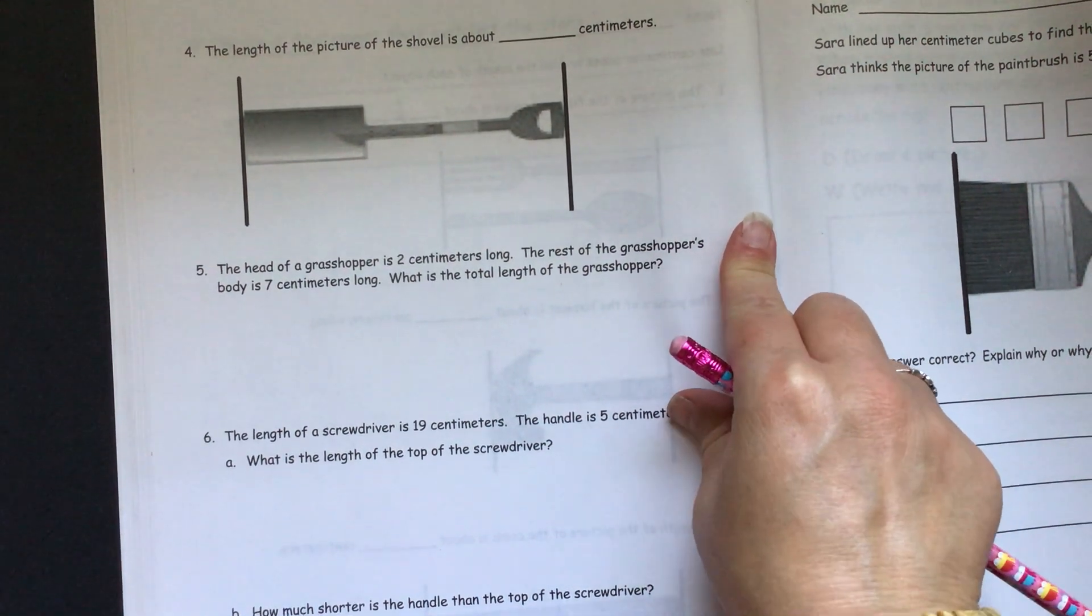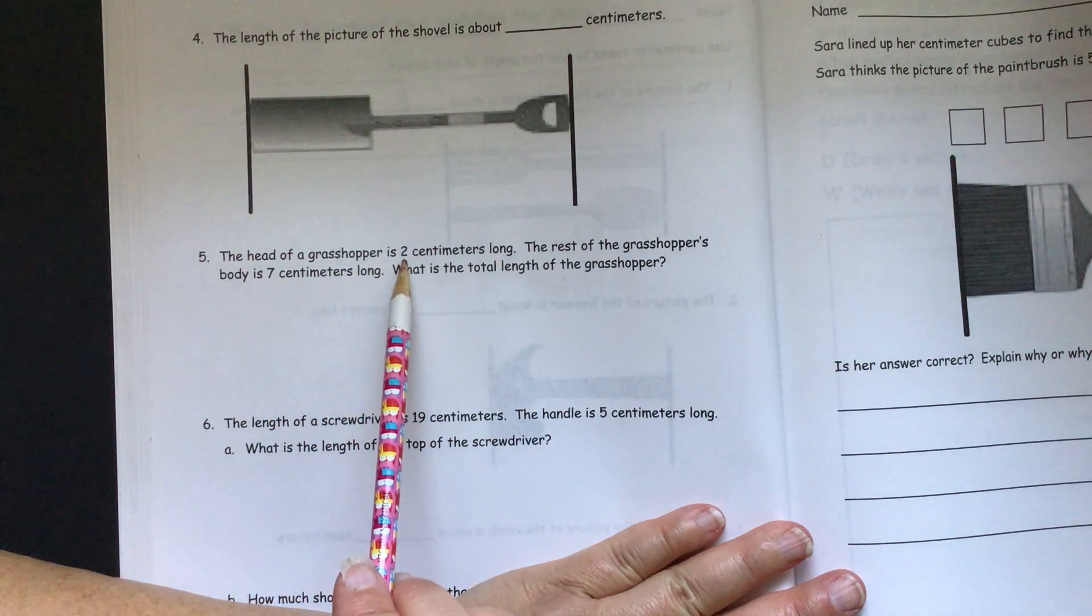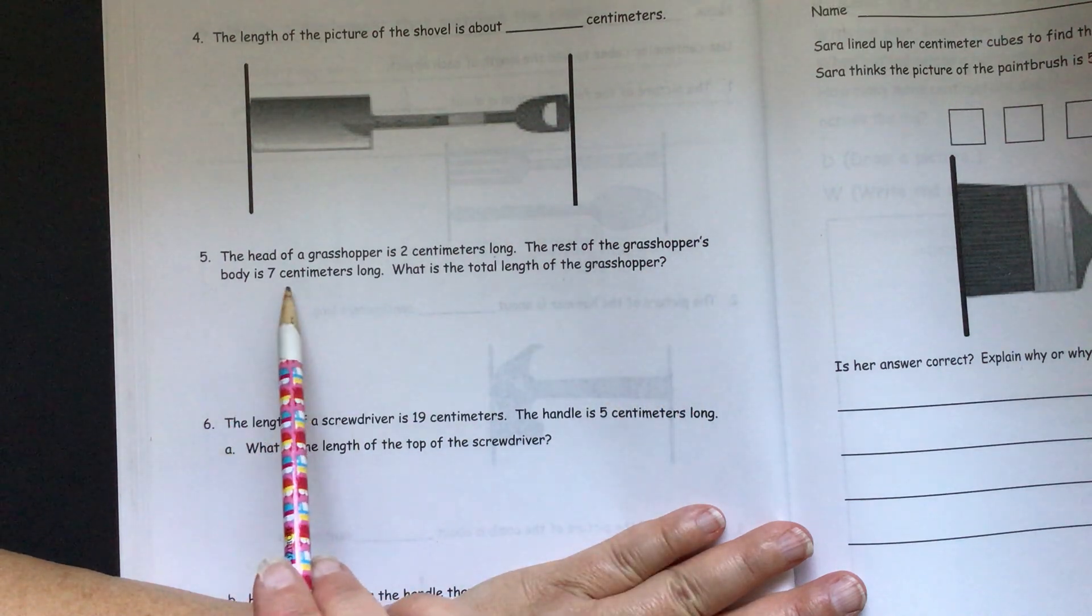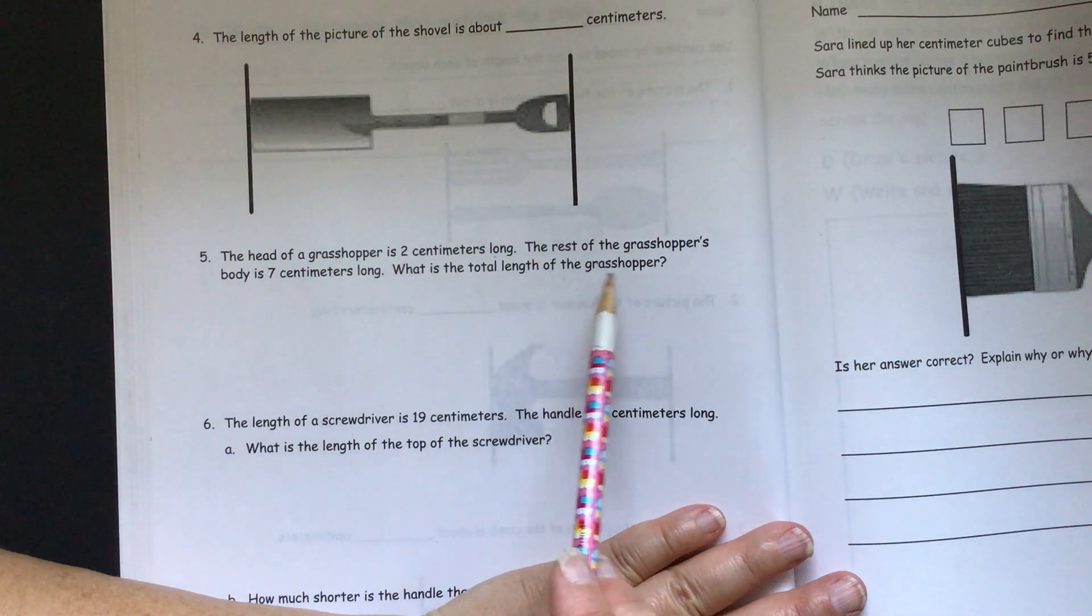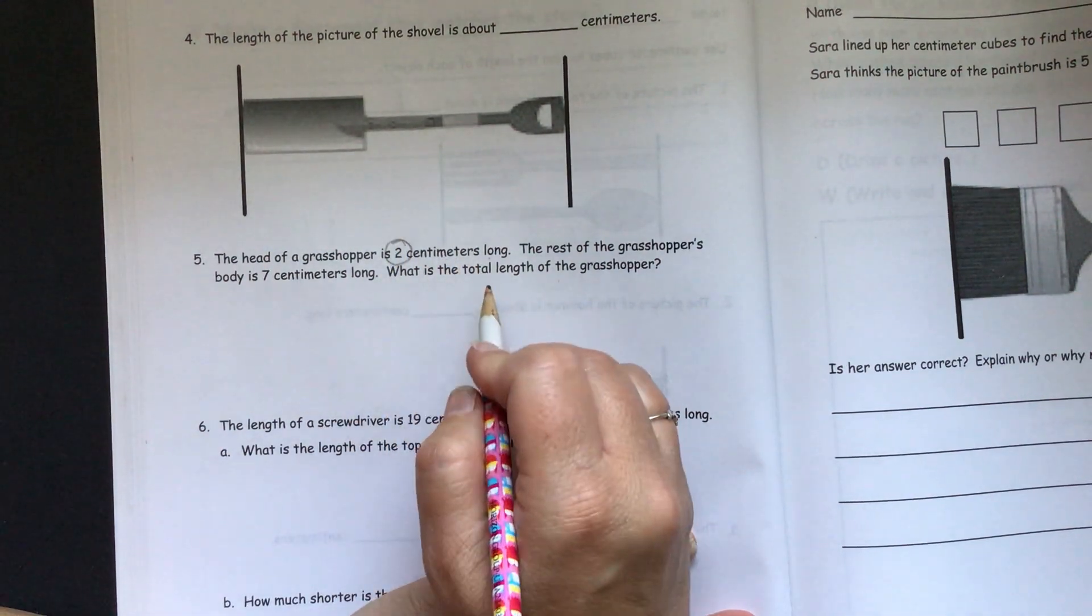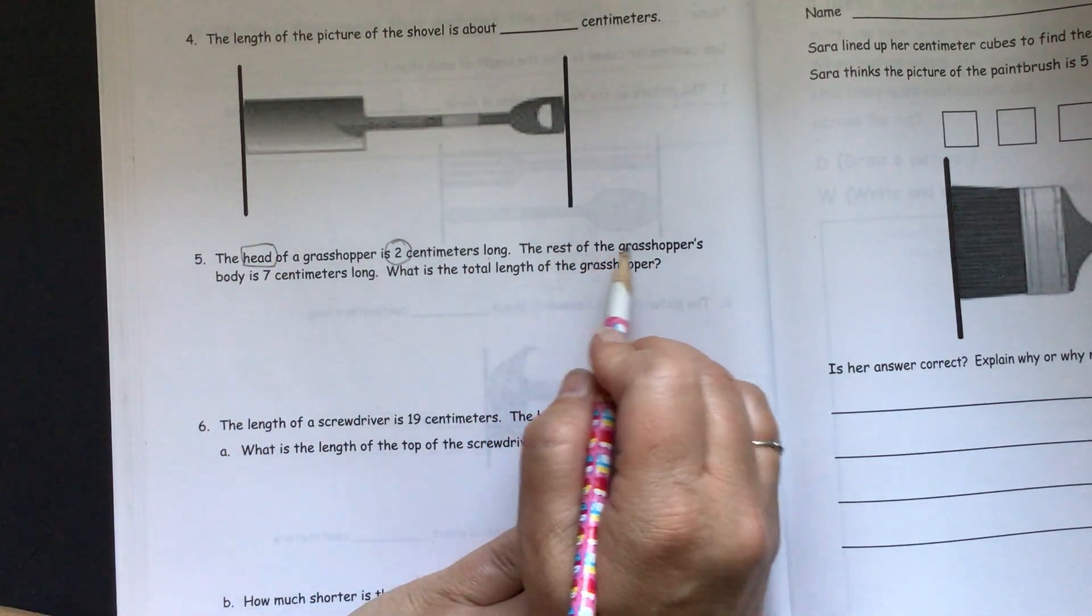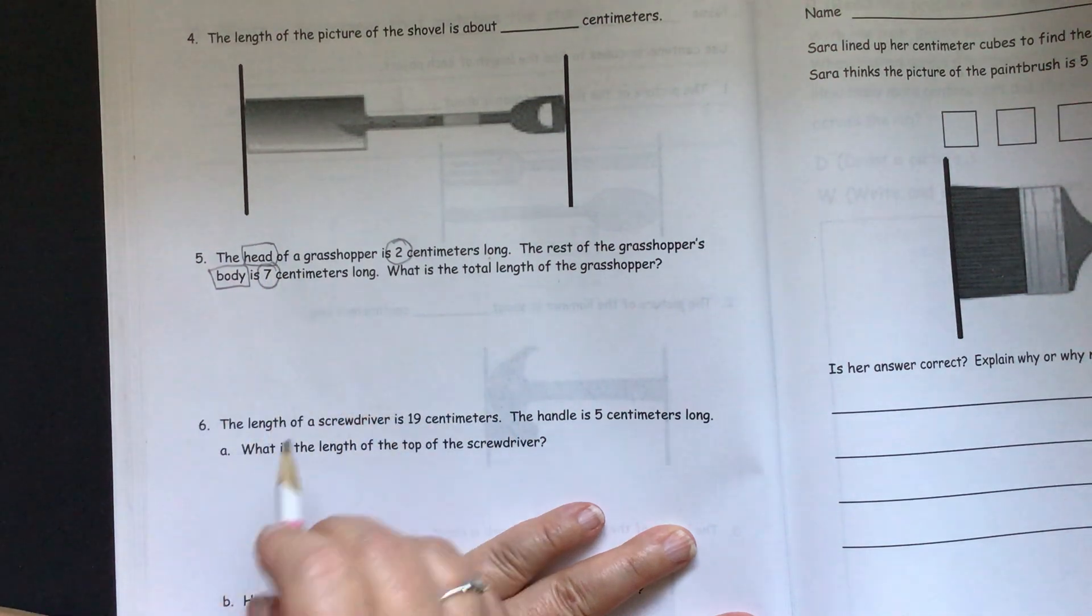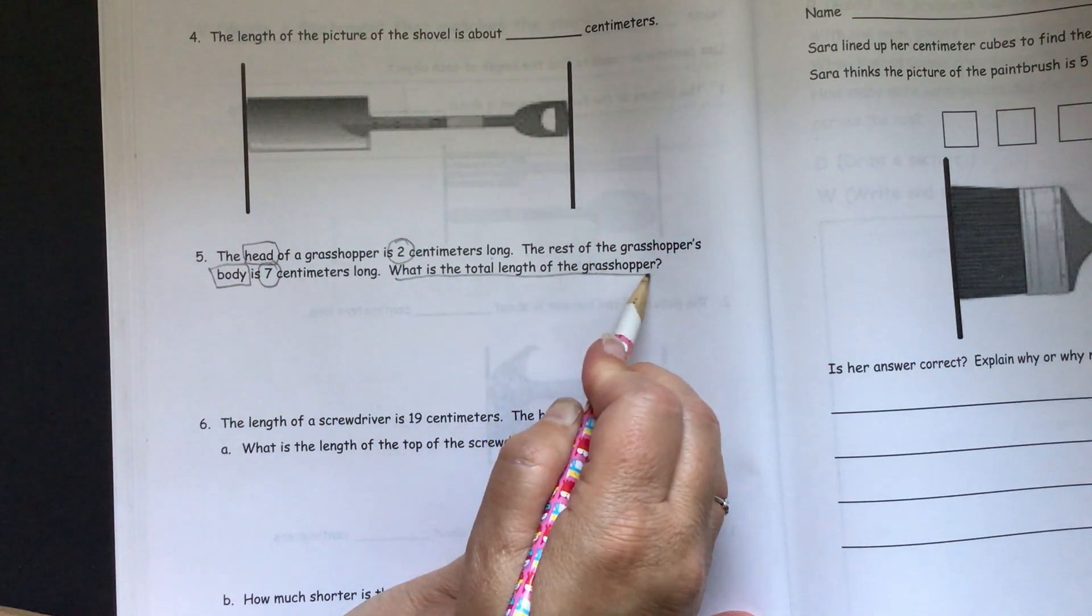So it has the head of a grasshopper is two centimeters long. The rest of the grasshopper's body is seven centimeters long. What is the total length of the grasshopper? Okay, so our key information. We have two centimeters long for his head, and the rest of the grasshopper's body is seven centimeters long. And we want to find out what is the total length of the grasshopper.